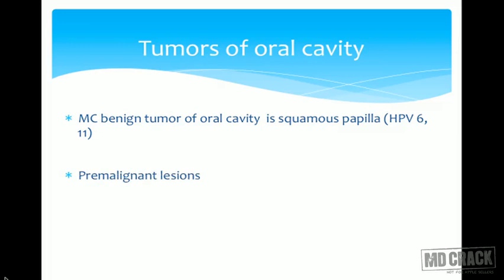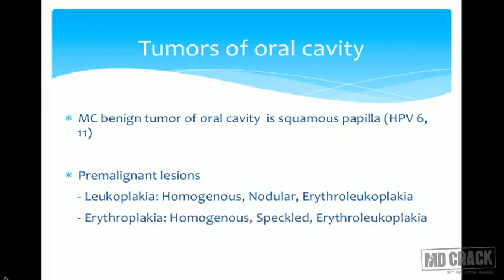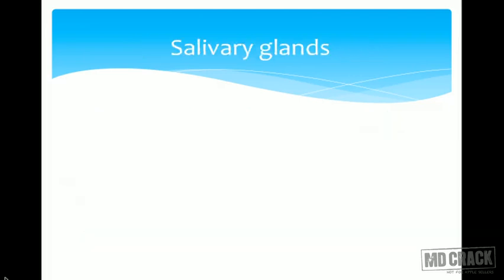Pre-malignant lesions of the oral cavity include leukoplakia, which can be homogenous type, nodular type, or erythroleukoplakia — a combination of erythroplakia and leukoplakia. Similarly, erythroplakia can be homogenous type, speckled type, or erythroleukoplakia, as well as lichen planus.